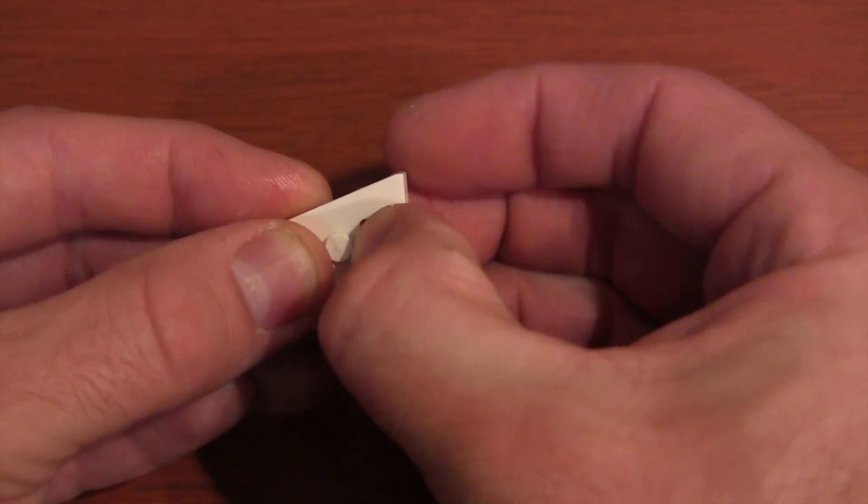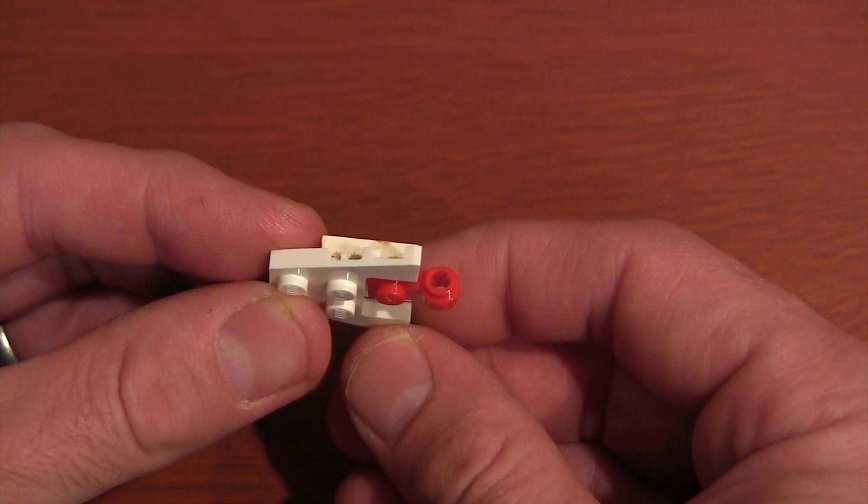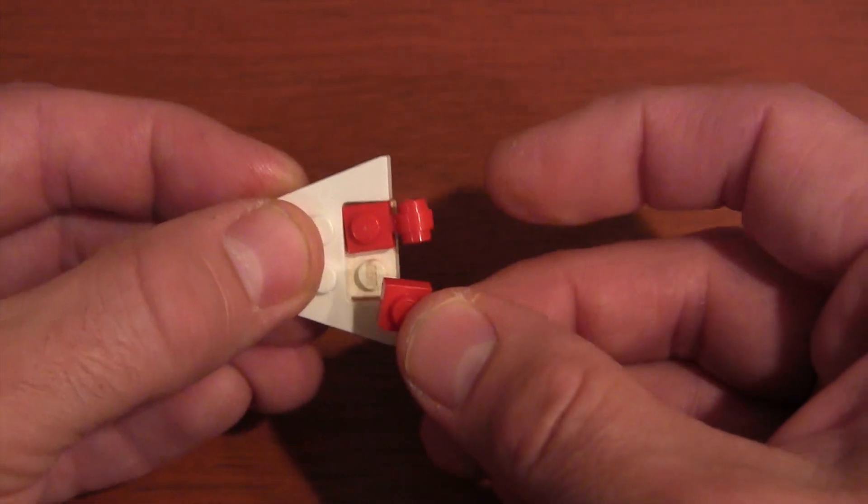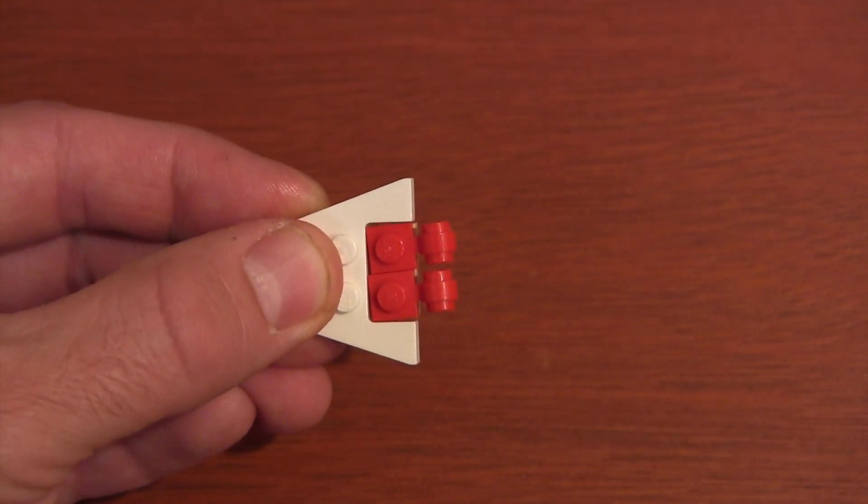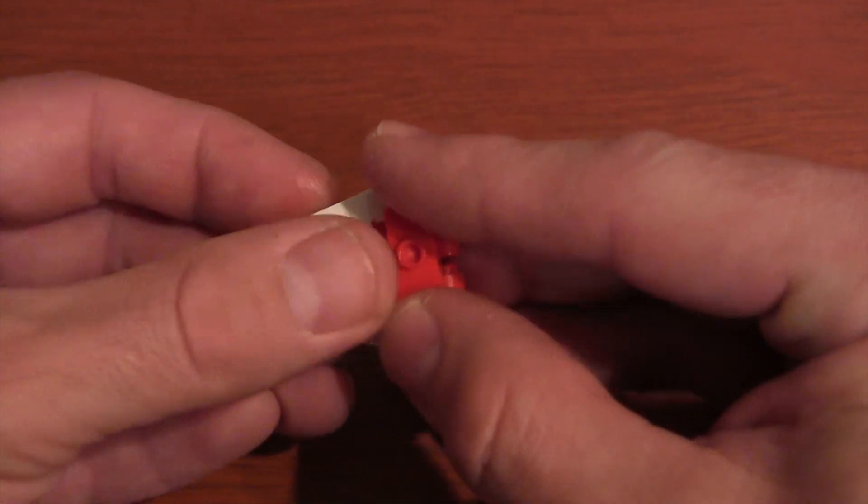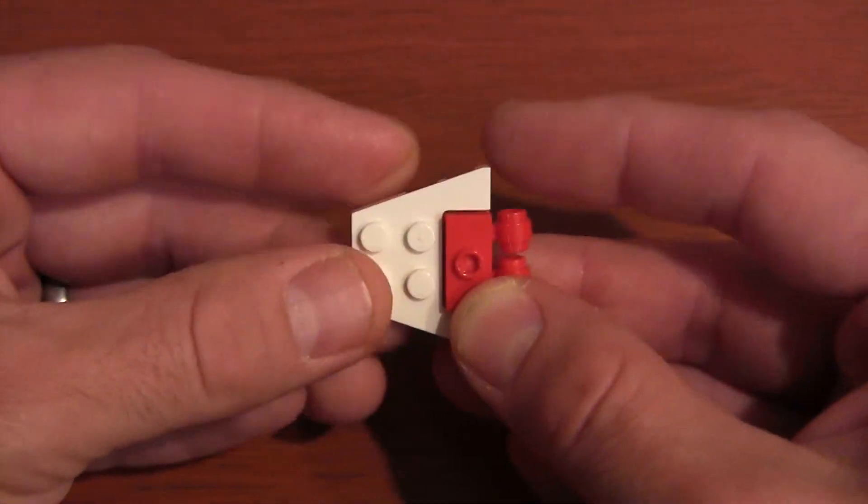We're going to get our 1x1 plates with the side thick ring and put those on top. Now, once we have those laid out, we get a 1x2 jumper plate and put it on top of those ring plates.